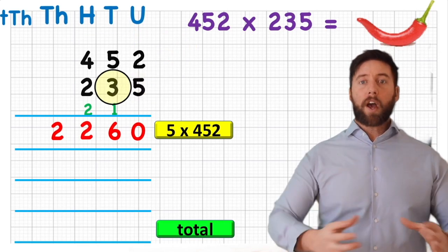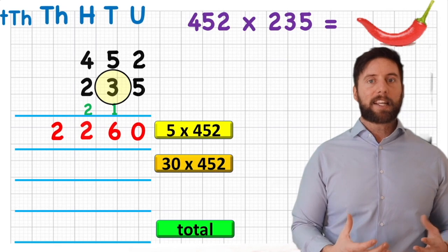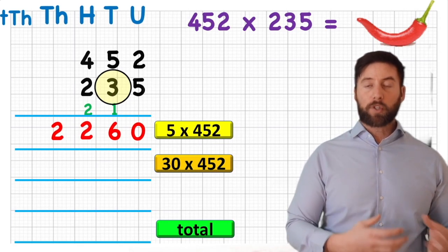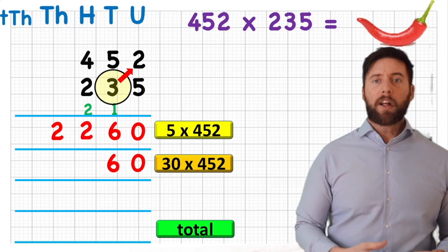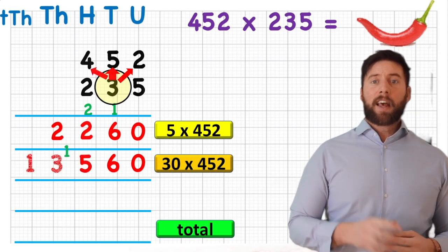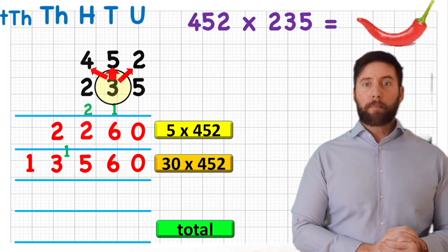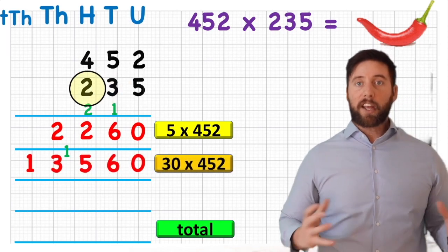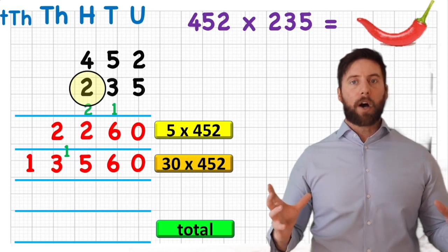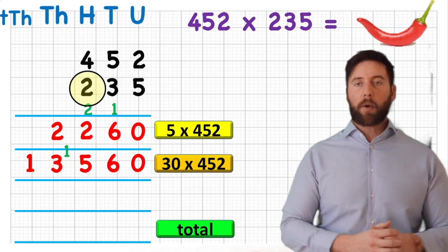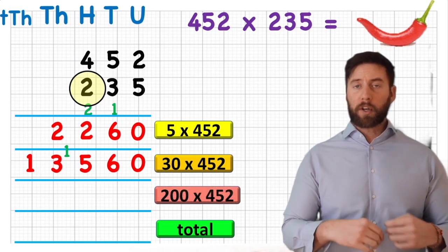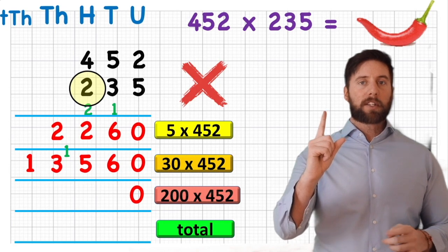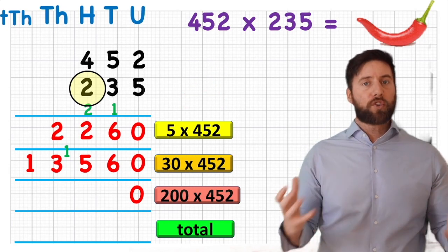For the second row, we're looking at the 3, but it's not a 3 — it's a 30. So we make it 10 times larger by putting in one placeholder. We then do 3 times 452: 3 times 2 is 6, 3 times 5 is 15 — carry 1 — and 3 times 4 is 12 plus the 1 is 13. So 30 times 452 is 13,560. Now we've got the 2 in the hundreds place — that's 200. We want to multiply 200 times 452, but I need to think carefully about my placeholders.